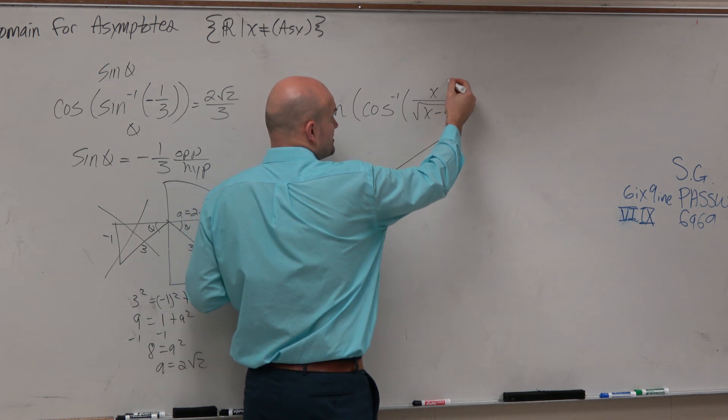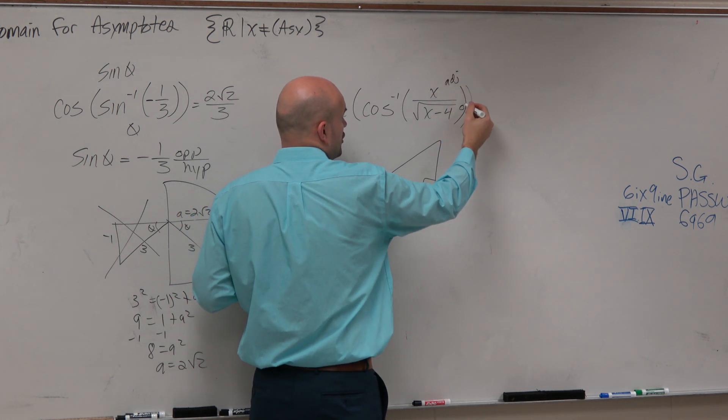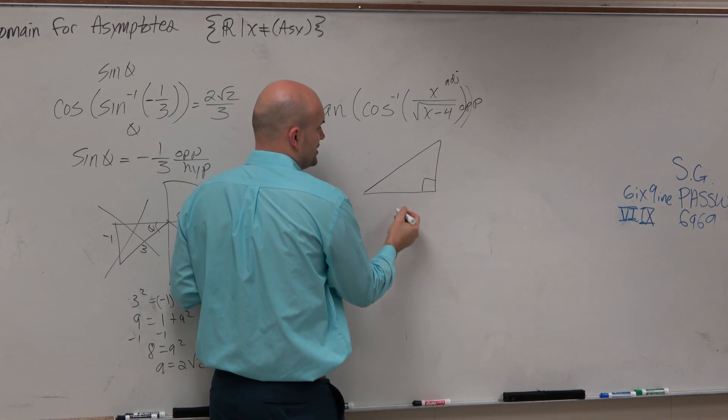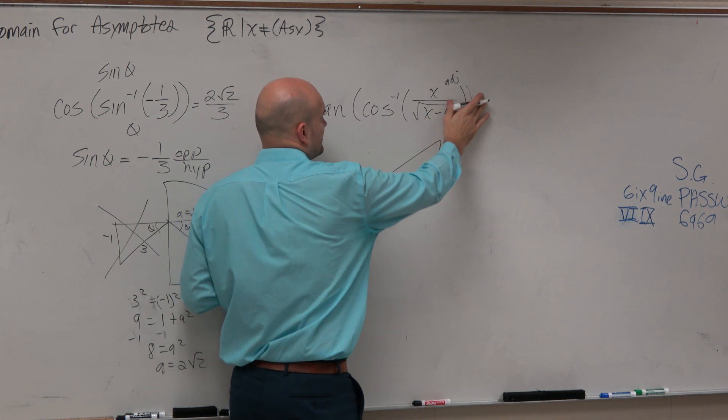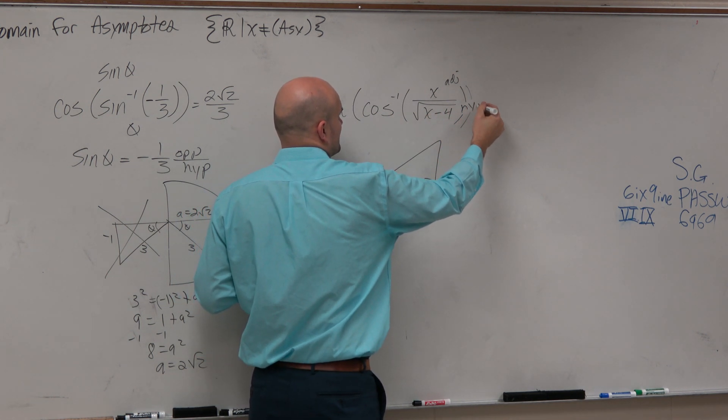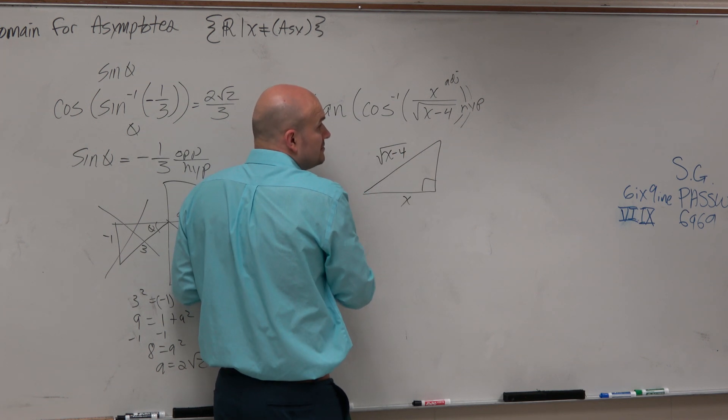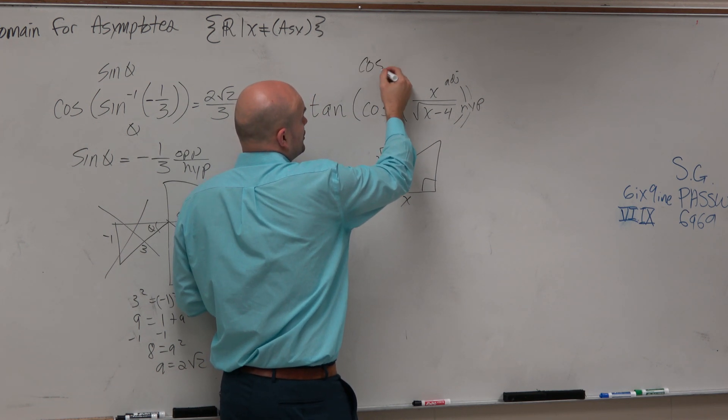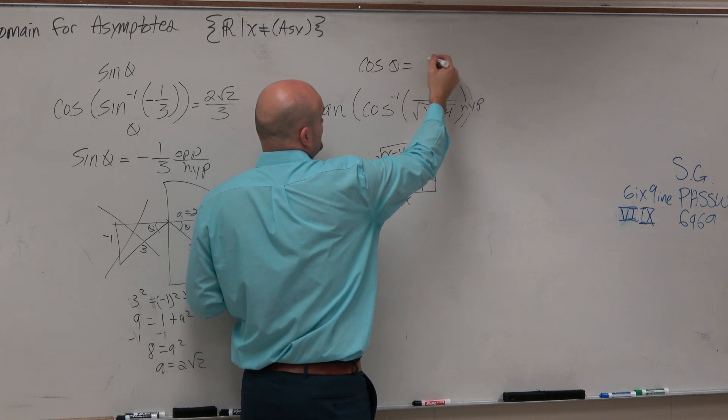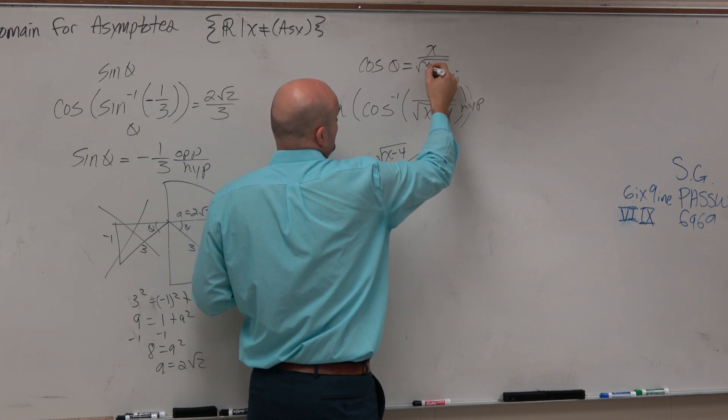So again, we think about this. This is the adjacent over the opposite. So the adjacent side is x. Sorry, hypotenuse. And this is your hypotenuse. Again, you're kind of confused with that. Cosine of some angle is equal to x over square root of x minus 4.